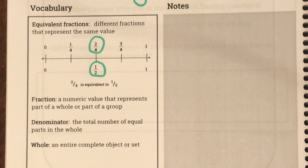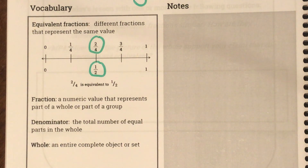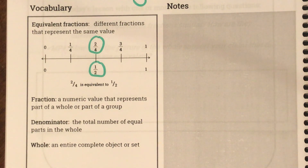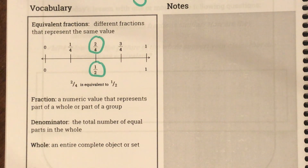Our next word is fraction — a numeric value that represents part of a whole or part of a group. The denominator is the total number of equal parts in the whole. And the whole is an entire complete object or set.